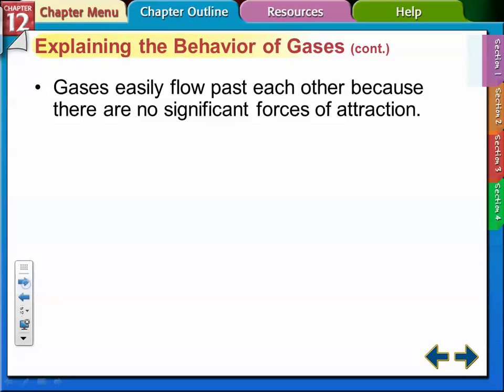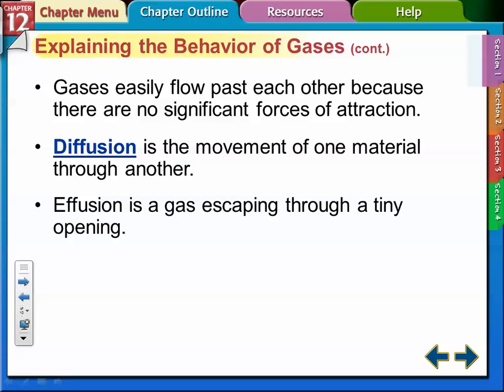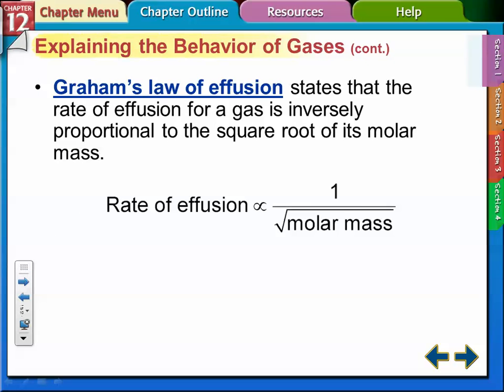Gases flow easily past each other. Diffusion is the movement of one material through another—if somebody sprays perfume or deodorant on one side of the room, pretty soon you smell it across the room. Effusion is gas escaping through a tiny opening, like letting air out of a tire or balloon. Graham's law of effusion states that the rate of effusion of a gas is inversely proportional to the square root of its molar mass.